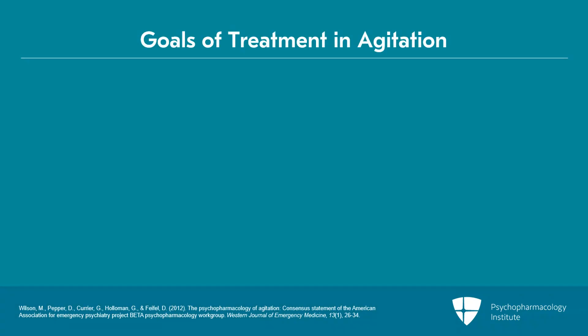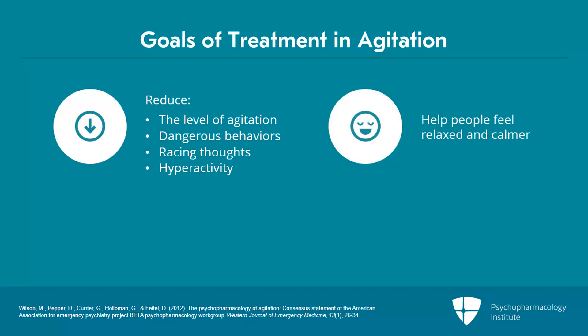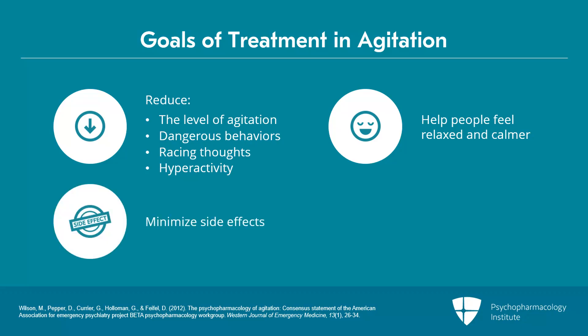When we're thinking of agitation medications in general, what are our goals? What are we trying to do when we treat agitation? Number one — and this is almost obvious — we want to reduce that level of agitation, reduce those dangerous behaviors, the distress, the anguish that the agitation is causing, reduce the racing thoughts, the hyperactivity, and help people feel relaxed, calmer, and in better control. We want to do that in such a way where there are as few side effects as possible, just like we do with any medication.